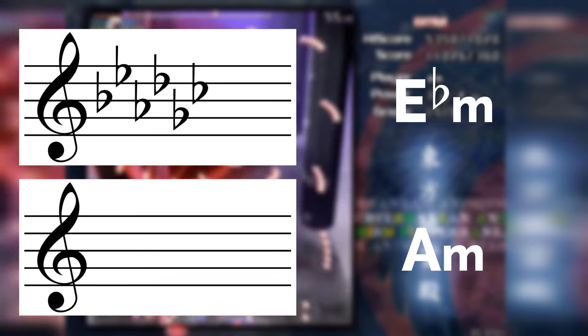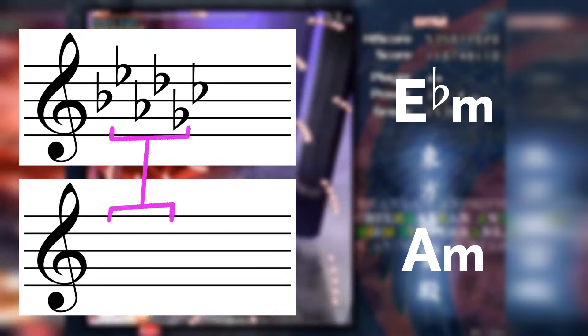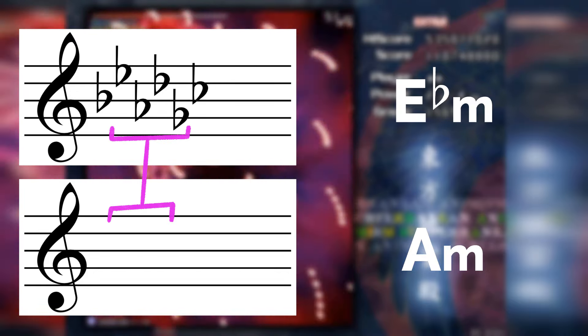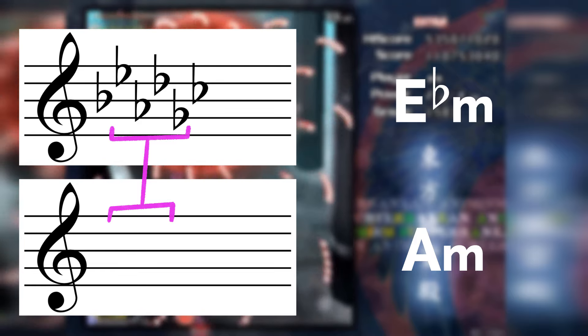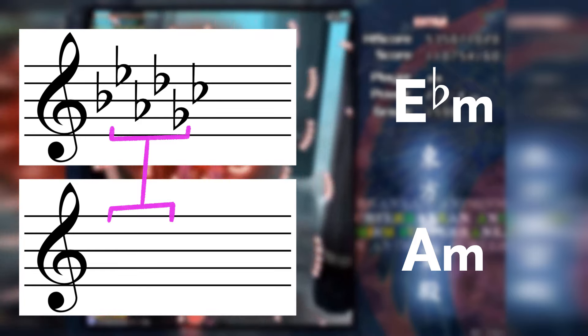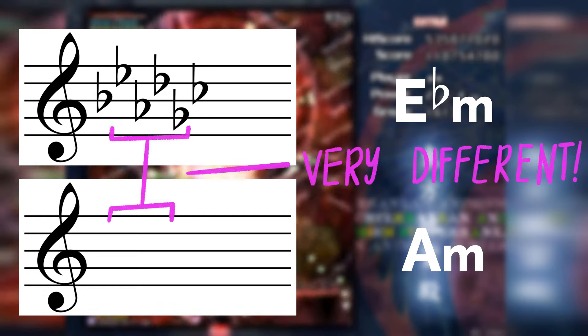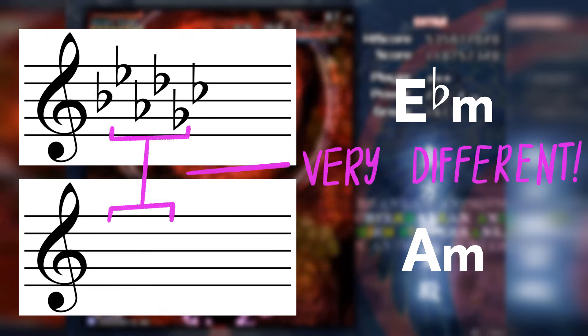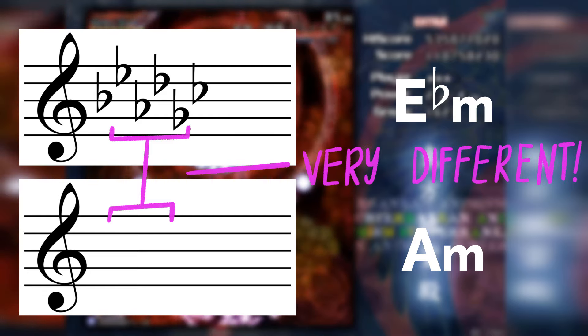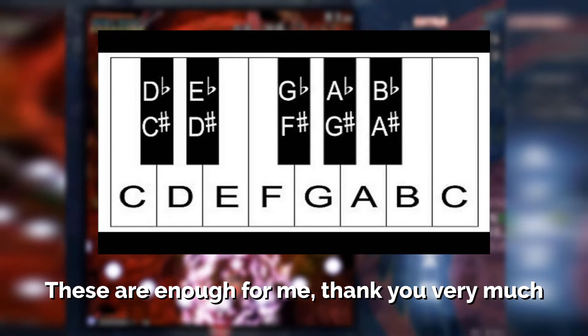The distance between any two keys can be measured by the number of notes that these keys have in common, and any two keys that are a tritone apart from each other, like Eb minor and A minor, are going to have as few notes in common as is physically possible in equal temperament tonal music.